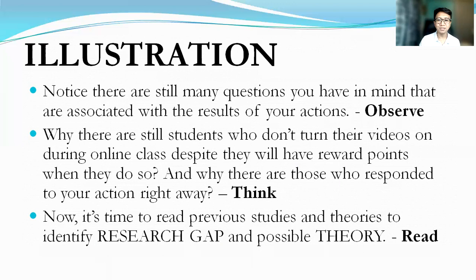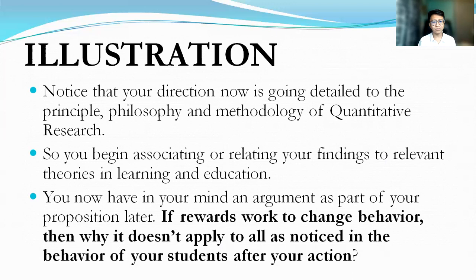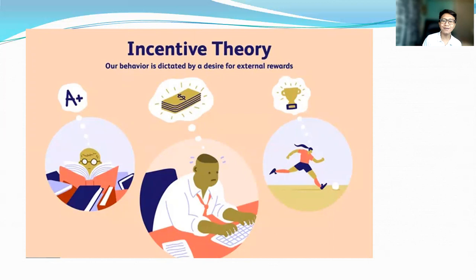Notice that your direction is going deeper into the philosophy and methodology of quantitative research. You begin associating your findings to relevant theories in learning and education. You now have an argument as part of your proposition. For example: if rewards work to change behavior, why doesn't it apply to all students? Suppose the answer is found in the incentive theory, which states that our behavior is dictated by a desire for external rewards. If that theory is true, you now form your argument and proposition.